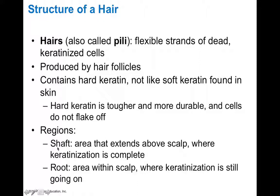In terms of regions of a hair, we have the shaft versus the root. The shaft is the area that extends above the scalp or above the skin — this is where keratinization is complete. The root is the area within the skin or scalp, and this is where keratinization is still occurring.